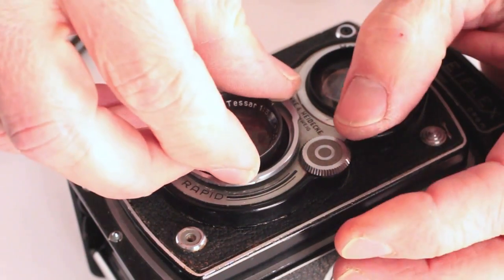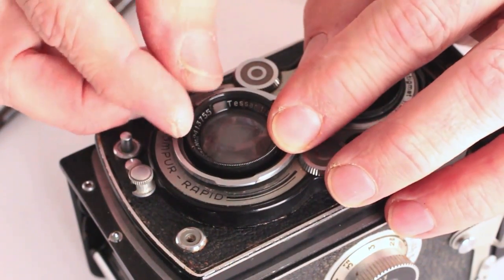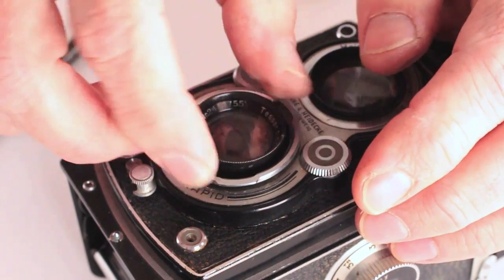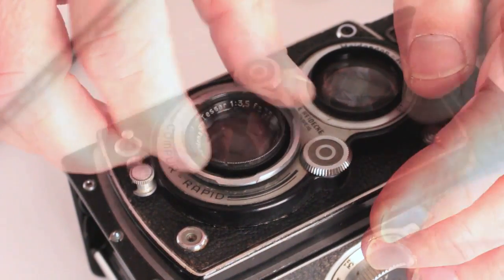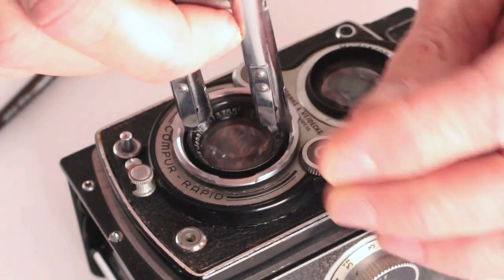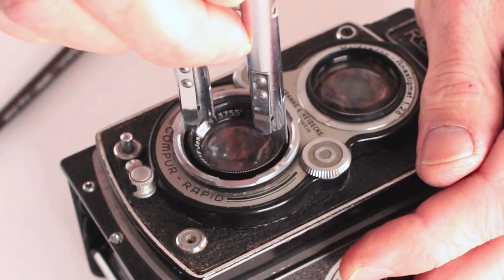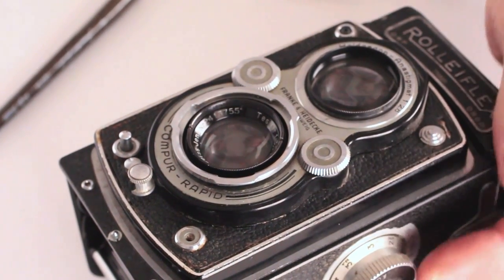Now seat the outer lens with your fingertips, taking care to make certain that the lens does not cross thread. Once the threads have grabbed, finish off with the use of a spanner wrench. Prevent marring the ring by using a closely matched spanner.